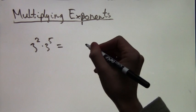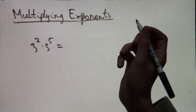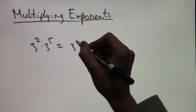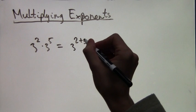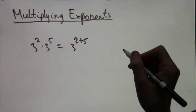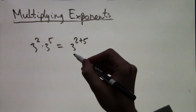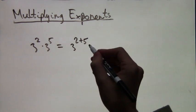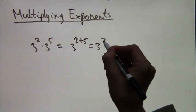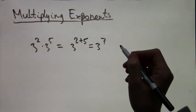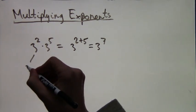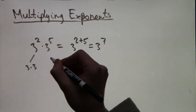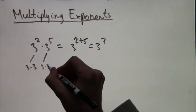There are certain rules when you go about multiplying exponents. For example, if you have 3 to the second times 3 to the fifth, this is equal to 3 to the 2 plus 5, or in other words 3 to the seventh. So when you multiply exponents with the same base, the powers you're taking them to add.